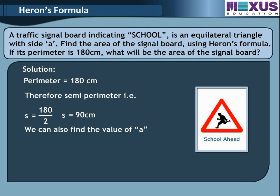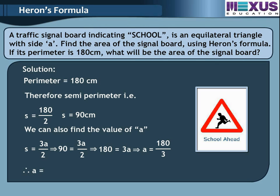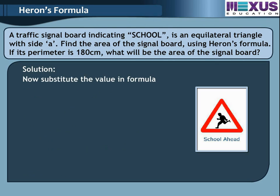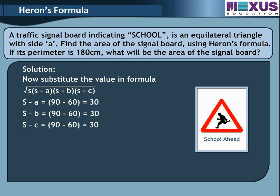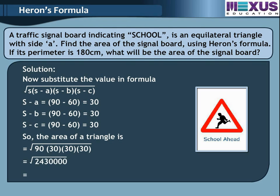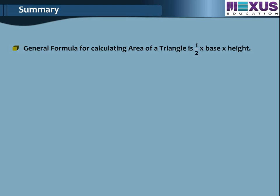We can also find the value of A. Since S equals 3A divided by 2, we get 90 equals 3A divided by 2, so 180 equals 3A, therefore A equals 60 cm. Substituting into Heron's formula, the area of the triangle equals square root of 90 into 30 into 30 into 30, which equals 900 root 3 cm square. Let us revise all that we learned in this module on Heron's formula.